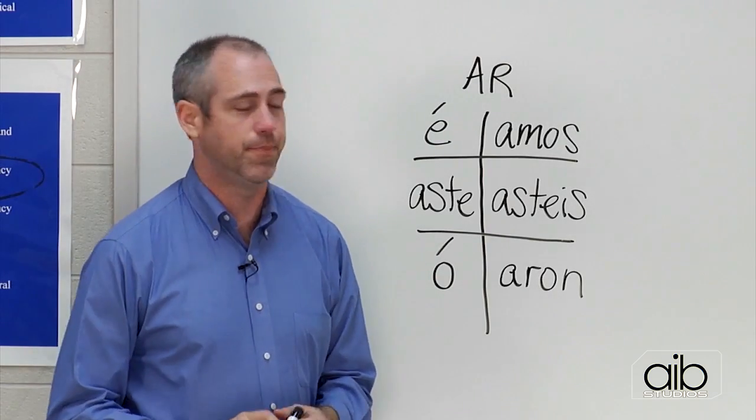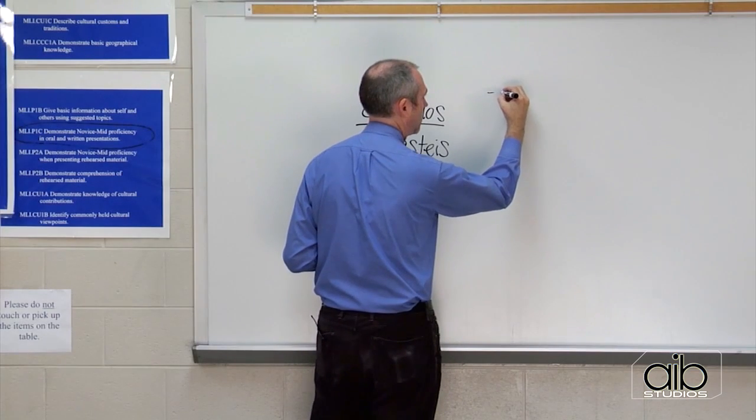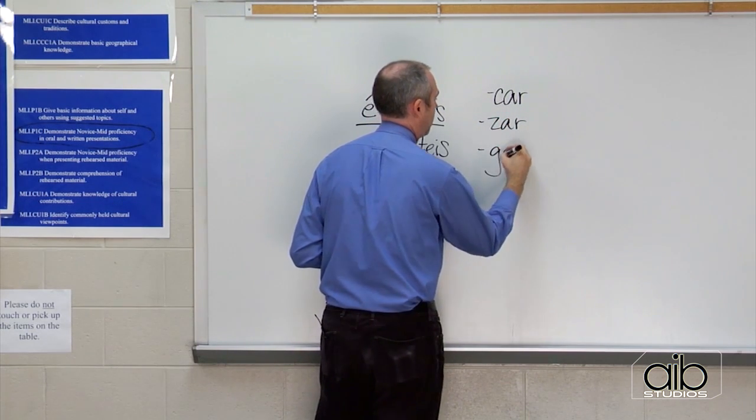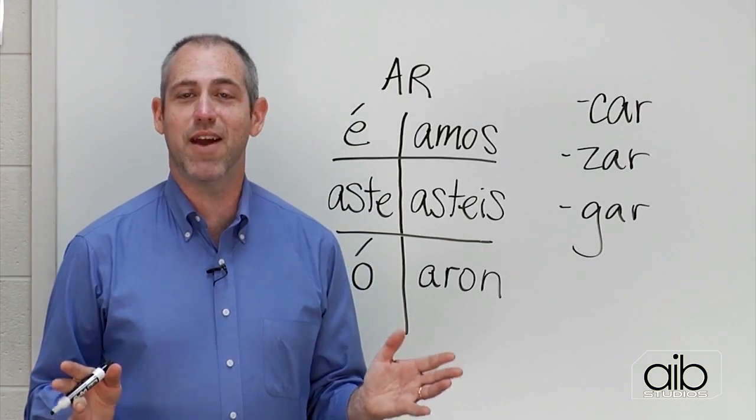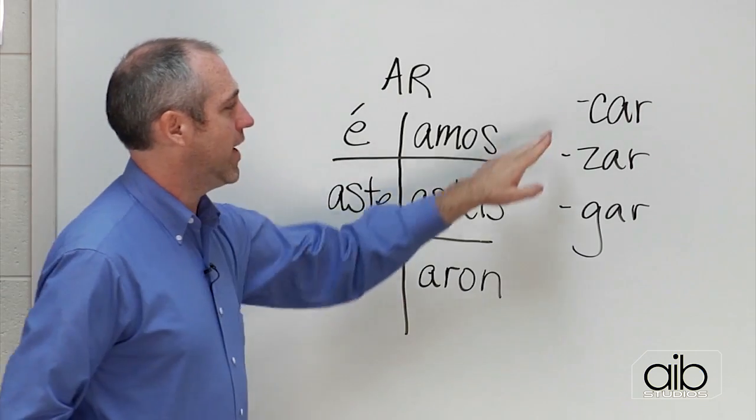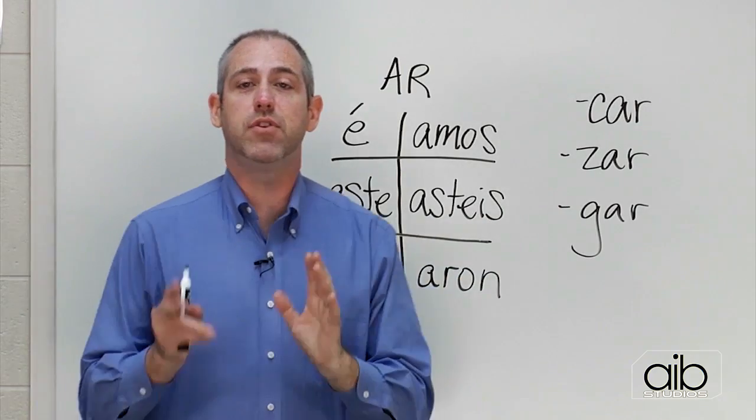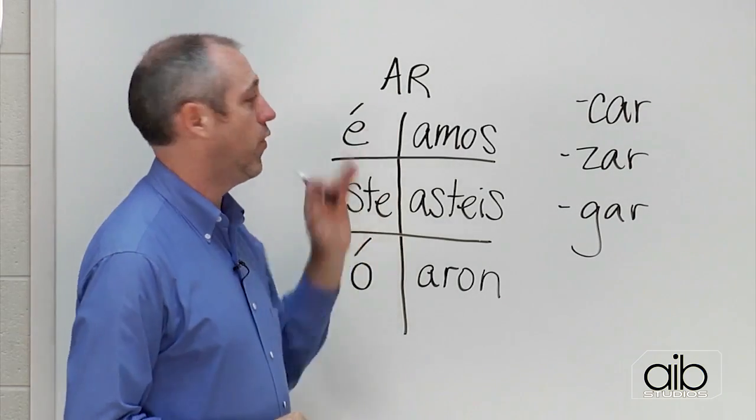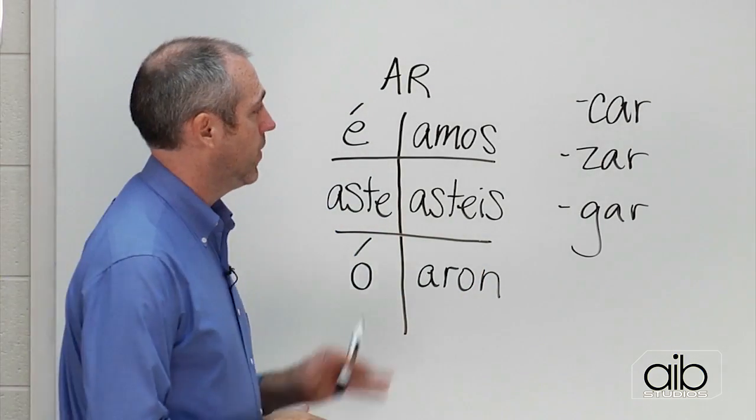Now, I do want to show you one little modification here that we need to look at. Over here, to the right, I'm going to put a couple of different types of verbs. First of all, there's the C-A-R verbs, and the Z-A-R verbs, and the G-A-R verbs. Now, I've told you many times that we have rules in language, any language, and we have rule breakers. Here are the rule breakers. But there's only one little thing you need to remember about this. When a verb ends in C-A-R, or Z-A-R, or G-A-R, we have to look at the yo form specifically in the preterite tense. We're only talking about the yo form in the preterite tense. That's it. None of the other forms, no other tenses.